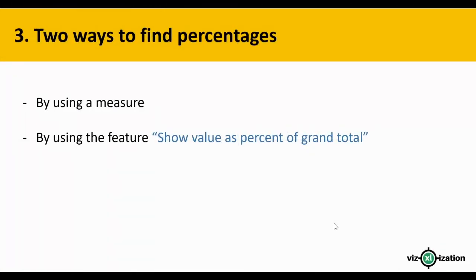There are two ways to find percentages in Power BI — there might be more, but for this tutorial we will apply two. The first one is by using a measure, which is my favorite, and the second one is by using the feature called 'Show Value as Percent of Grand Total.' We will be using both of these options in our practical case.